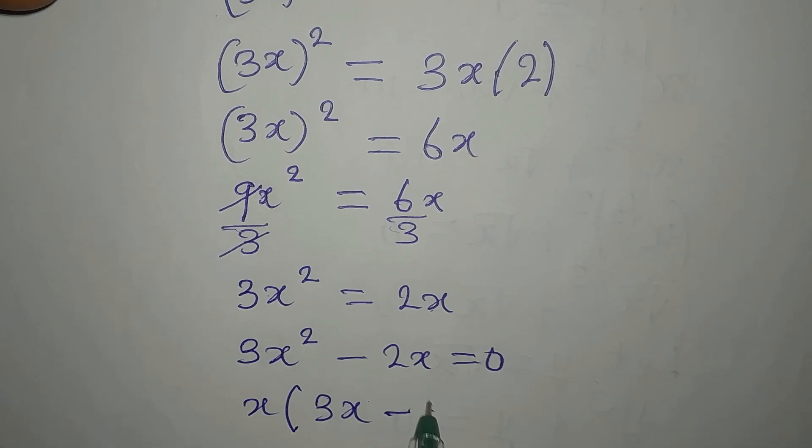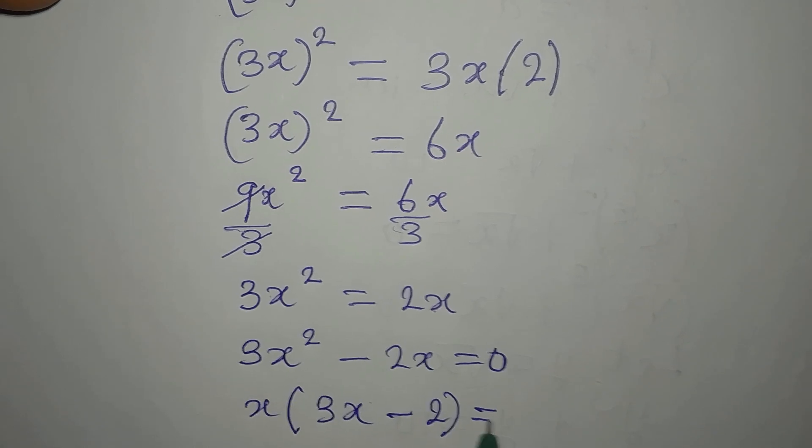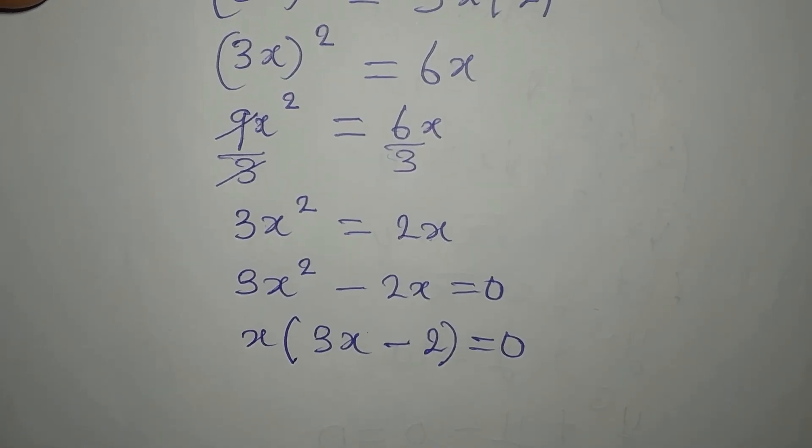What is common is x. Then here we have 3x. x is already out, so we have 2, and this is equal to zero.